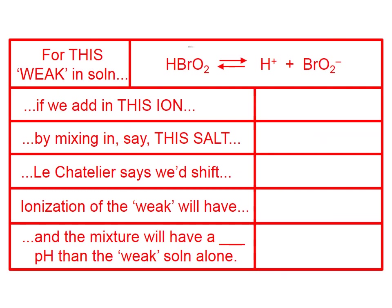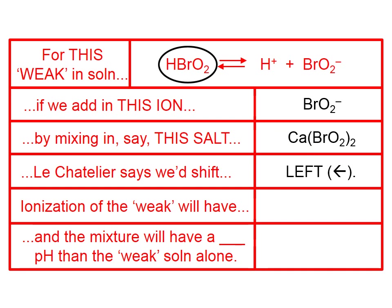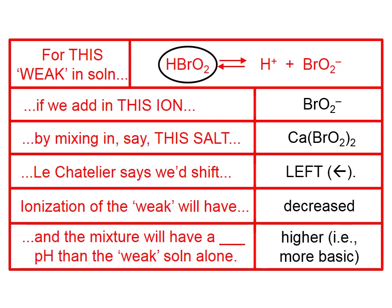Let's try another example. For this weak in solution — bromous acid — we've got the ionization equation. If we add in the bromite ion by mixing in the salt calcium bromite, Le Chatelier says we would shift left, because we will have a bunch more bromite ion in the solution. Again, the ionization of the weak will have decreased. If we shift left, we will have consumed some of the free hydrogen ion, so the mixture will have a higher, more basic pH than the weak solution alone.